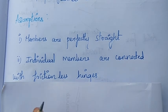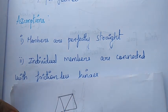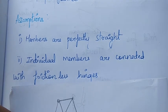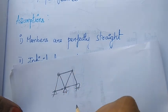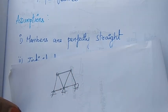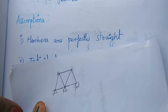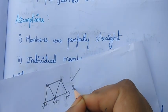Second assumption: individual members are connected with frictionless hinges. That means all joints are hinged and frictionless. We don't consider friction because it complicates the solving techniques, so frictionless hinges are assumed. This is our second assumption.